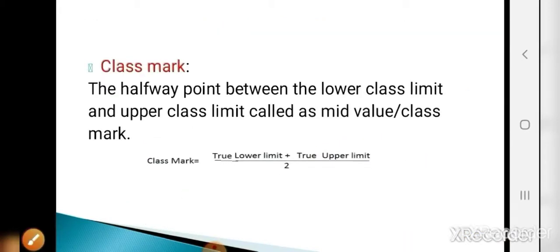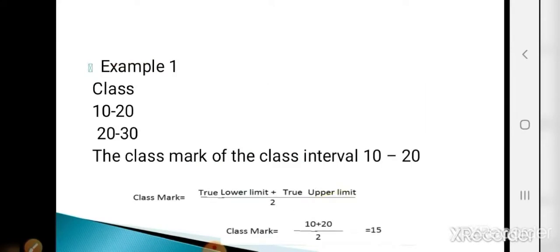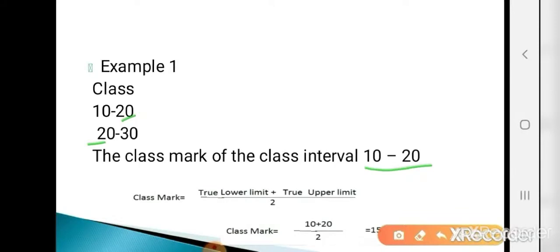Now the next point is class mark, also called mid value. The halfway point between the lower class limit and upper class limit is called the mid value or class mark. The formula for calculating class mark is: (true lower limit + true upper limit) / 2. For finding class mark, the classes must be in exclusive form. For example, classes 10 to 20 and 20 to 30 are already in exclusive form. Class mark of 10 to 20 = (10 + 20) / 2 = 15.